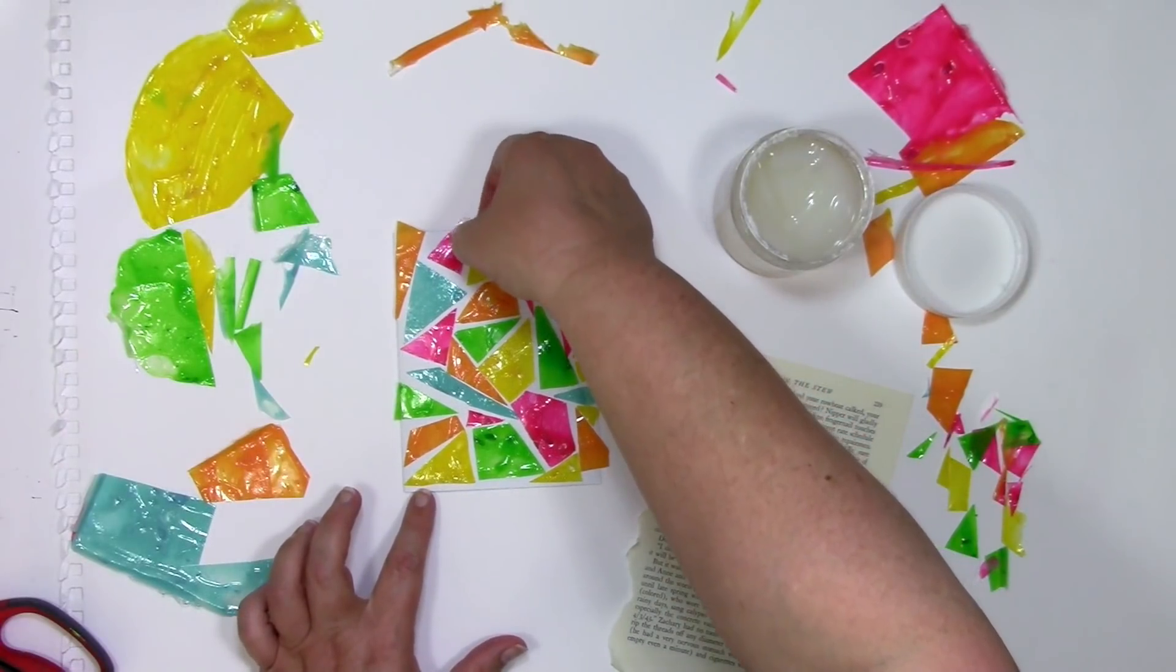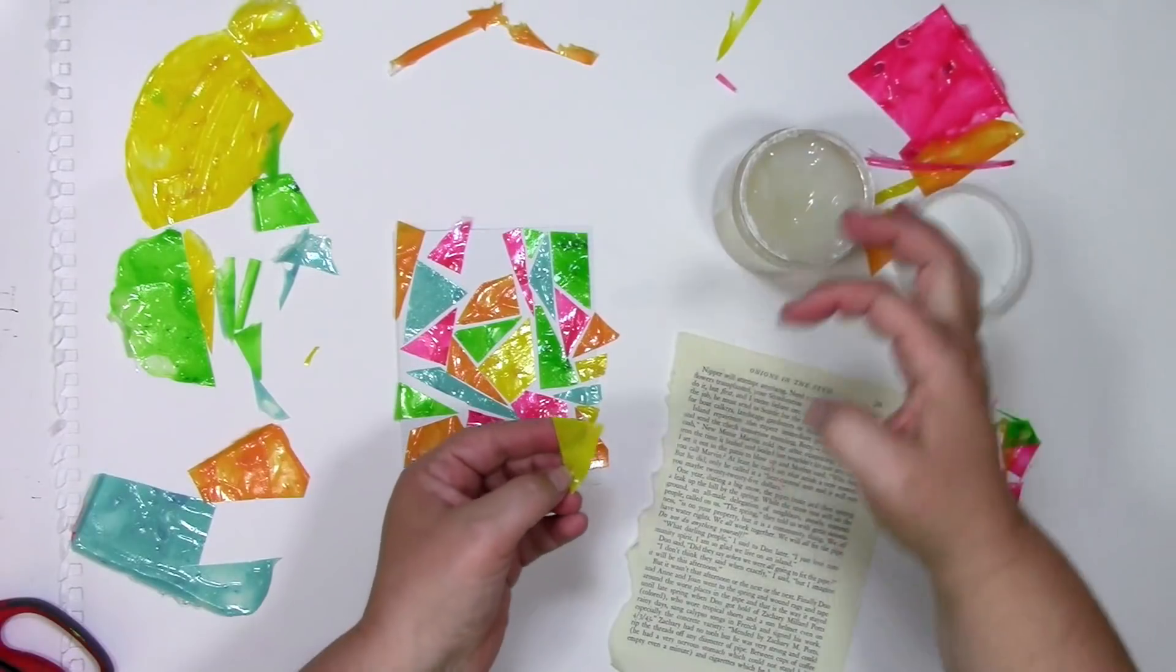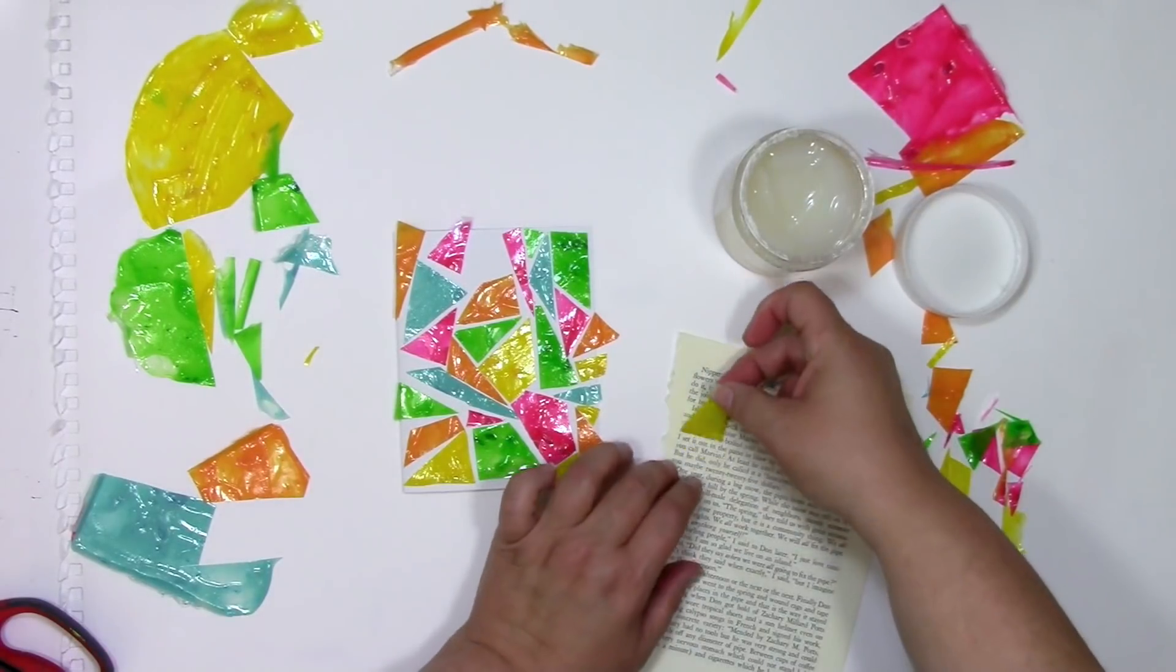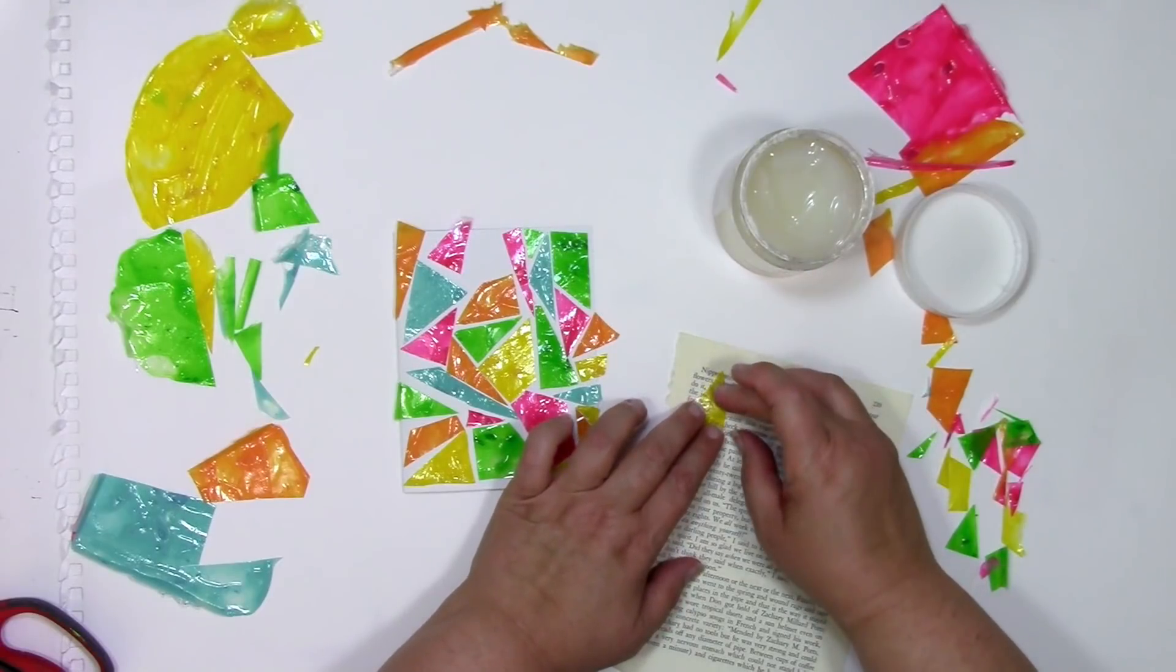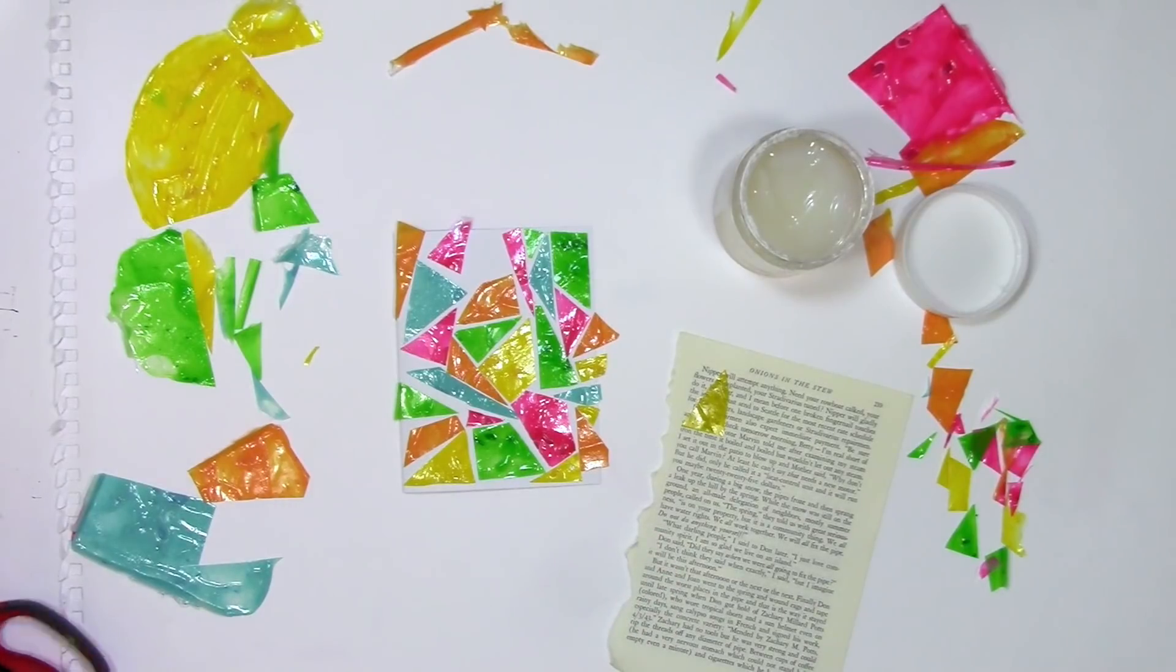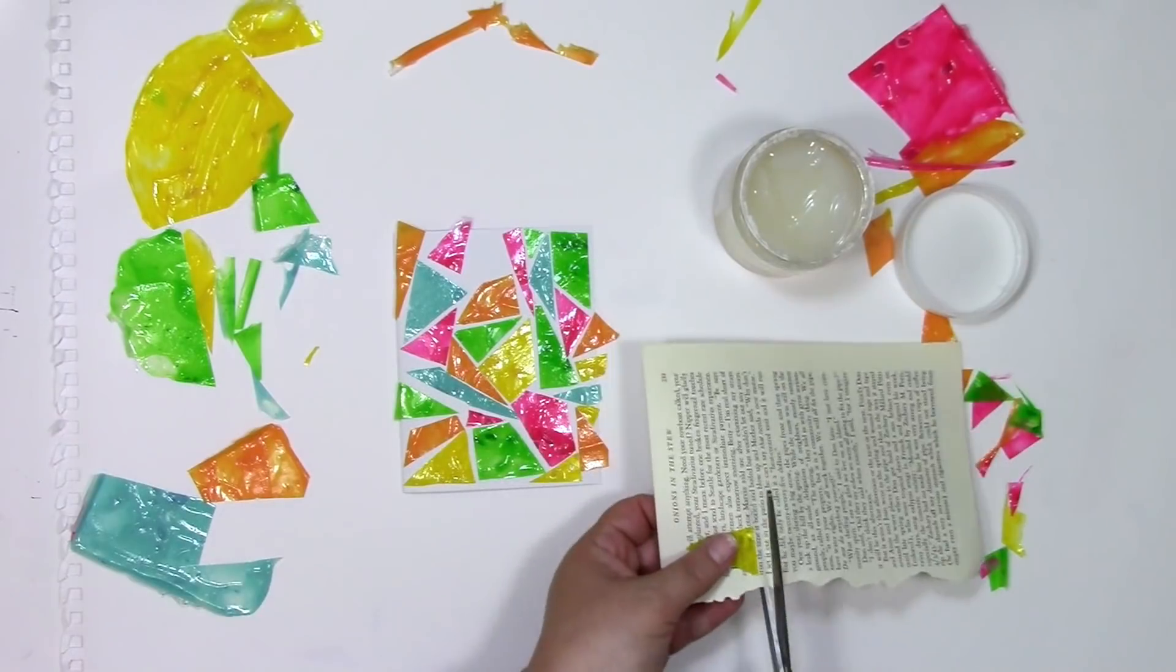Now the honey medium is translucent, so you can see through it. So when I put a little bit of the honey medium on the back of this and stick it onto a piece of book text, you'll be able to see the words through it. And then all I need to do is cut that shape out of the book text and then put it back into the mosaic where it was.